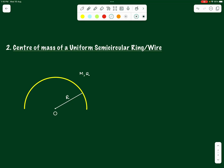We are finding the center of mass of a uniform semi-circular ring or wire. Drawn in yellow is our semi-circular ring of radius r and mass m. We are supposed to find out where we can concentrate all the mass of this half ring.